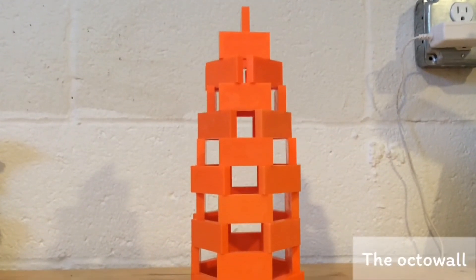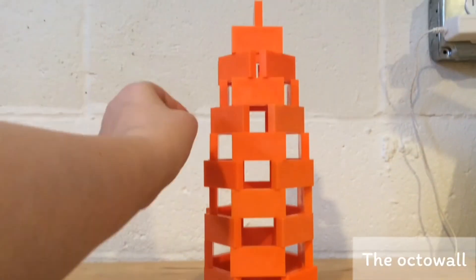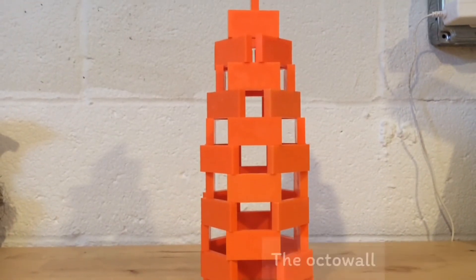Usually what you do to knock this down in the setup is you attach a string to one of the dominoes near the middle, but for this purpose, I'm just going to knock it right down.